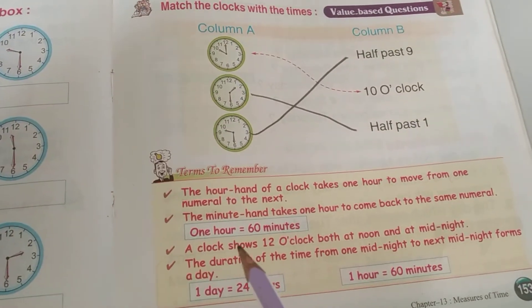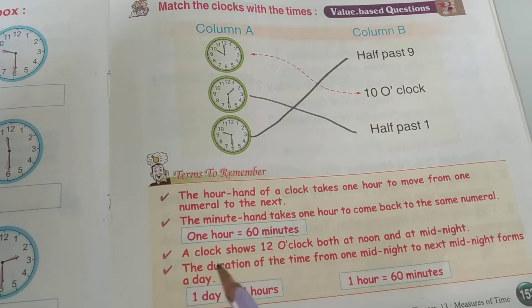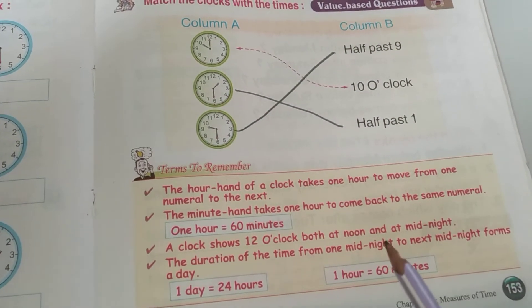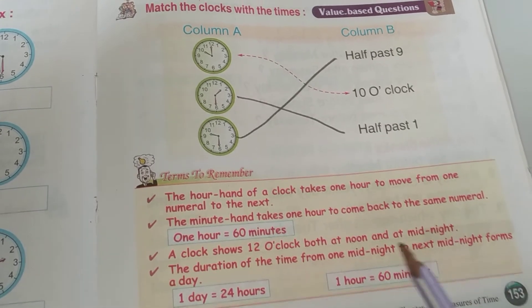One hour is equal to 60 minutes. A clock shows 12 o'clock both at noon and at midnight.